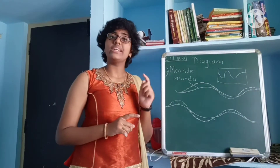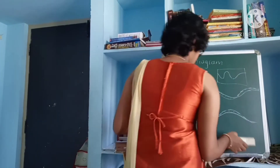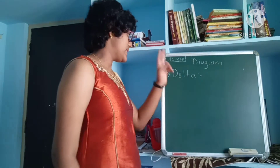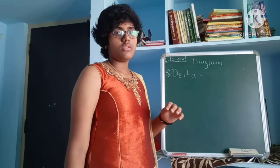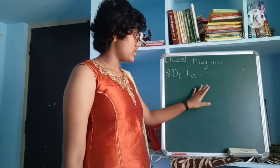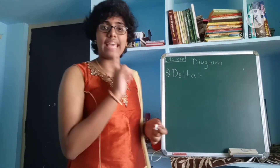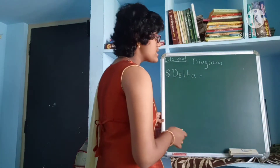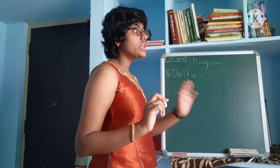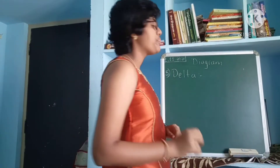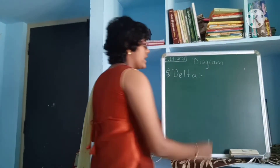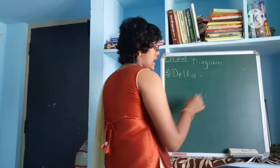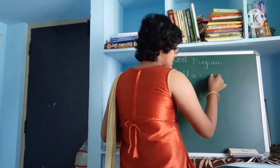Now we are going to learn about the delta. How these deltas are formed: near the mouth of the river, there will be large land areas in a triangular or any other shape.